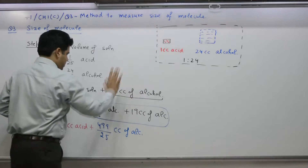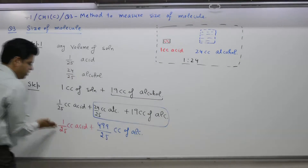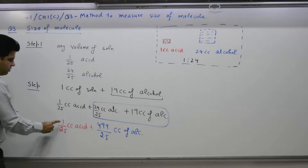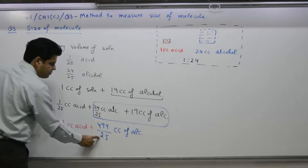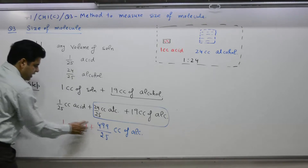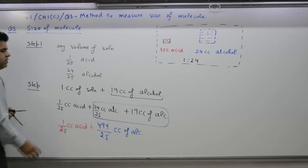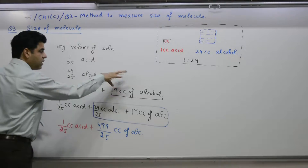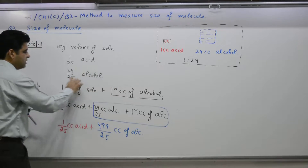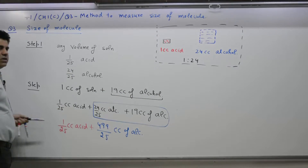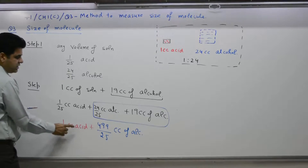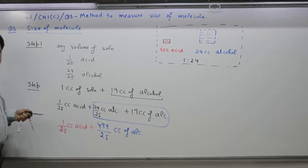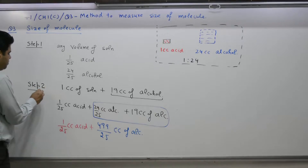In the new solution, you get 1/25 cc acid, and combining both alcohols you get 499/25 cc of alcohol. This new solution totals 20 cc. So if you take any drop from it, 1/25 cc is acid and 499/25 cc is alcohol.